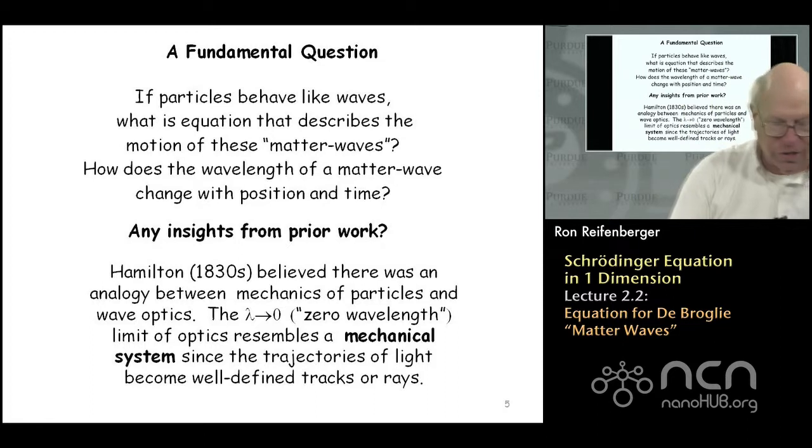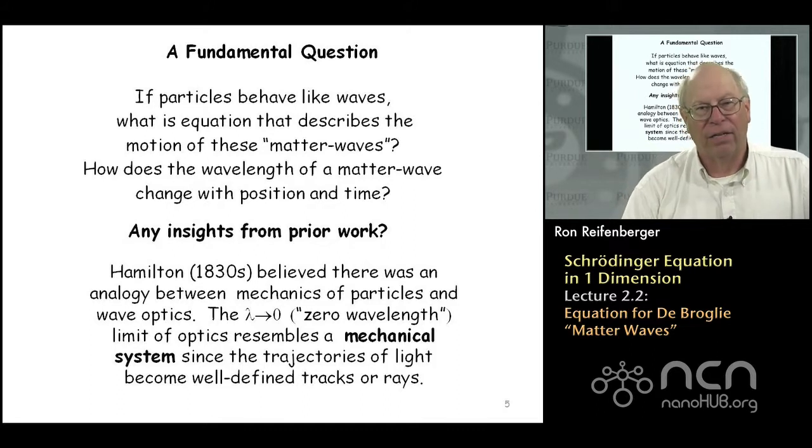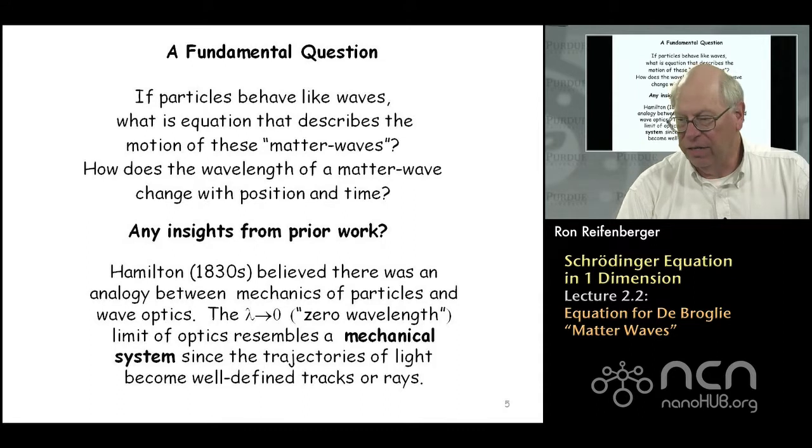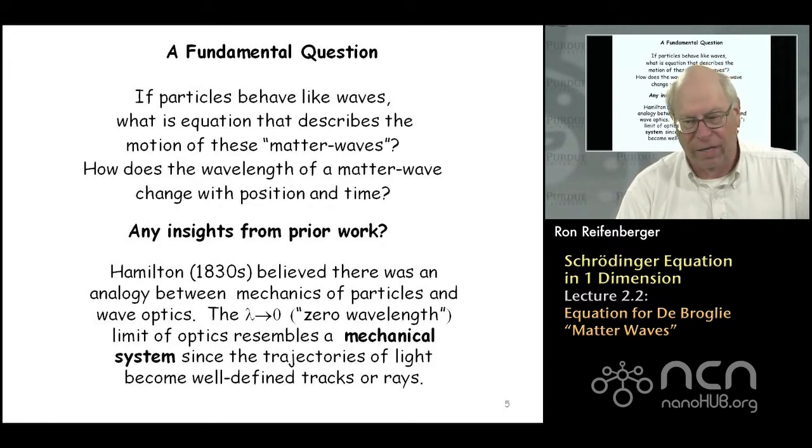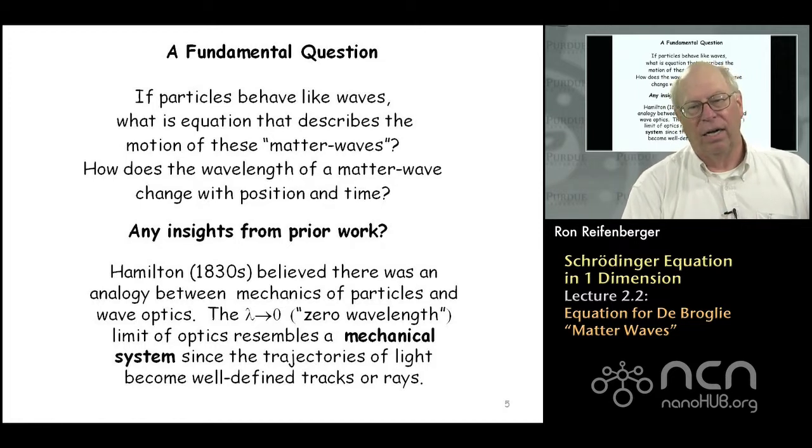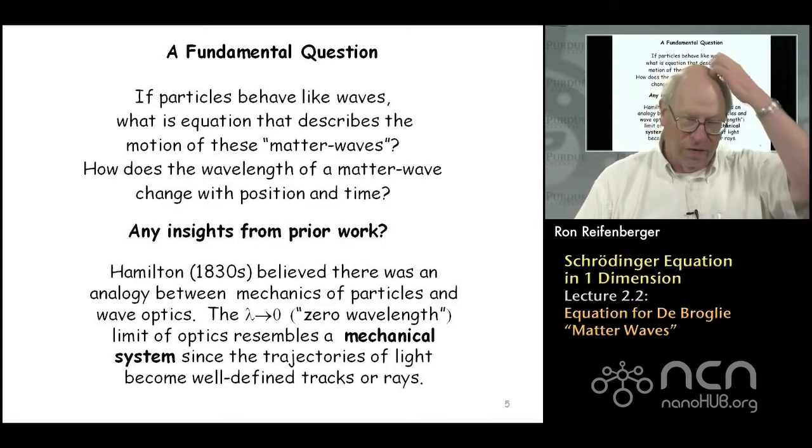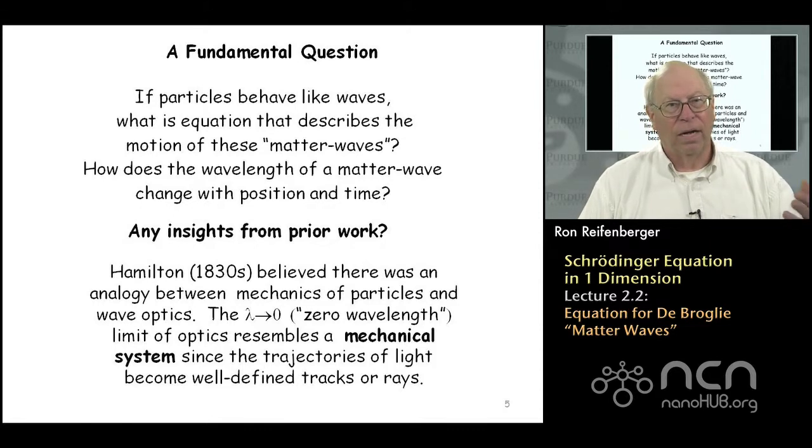So the premise of this lecture is to just basically write down an equation that describes how these matter waves, the de Broglie hypothesis, how they change with position and time. One of the important questions to ask is, is there any prior information out there that might be useful in writing down this equation? And there is, there's a lot of prior work. I like to cite Hamilton's work in 1830 where he basically derived this conservation of energy concept, which I'd like to review. That's going to be one of the important concepts that underlies Schrodinger's equation.